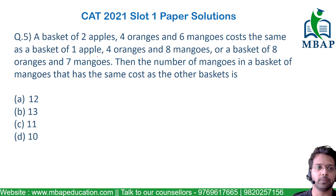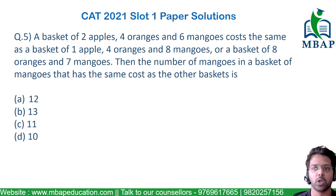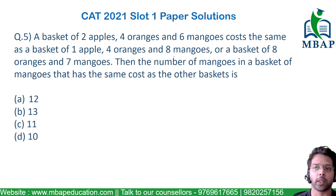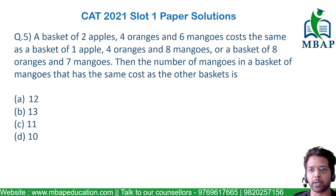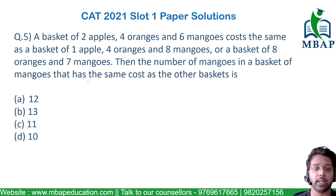Let's look at the next question. A basket of 2 apples, 4 oranges and 6 mangoes costs the same as a basket of 1 apple, 4 oranges and 8 mangoes, or a basket of 8 oranges and 7 mangoes. The question asks for the number of mangoes in a basket of mangoes that has the same cost as the other baskets.